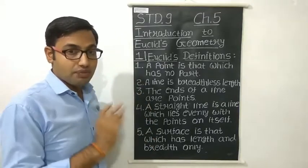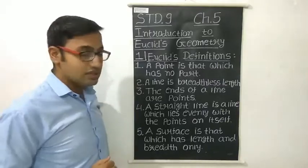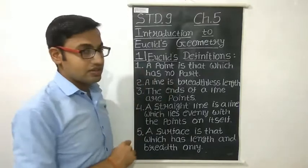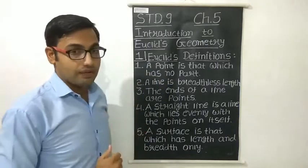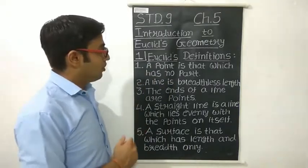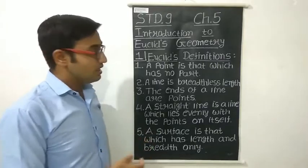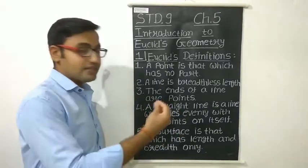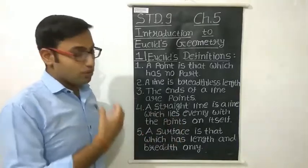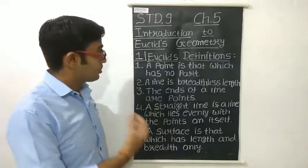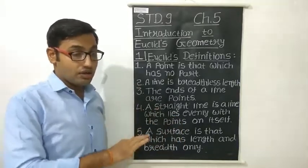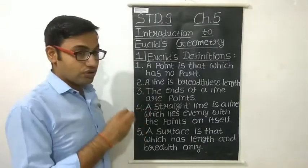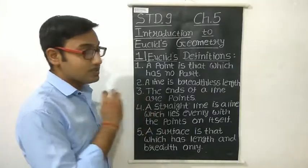These three parts are covered in this chapter. The very first part is Euclid's definitions, which we will study today. What is the meaning of definitions? Definitions mean to define something — to define some quantity or some shape. Since geometry is related to shapes, the definitions we have to study are related to shapes.